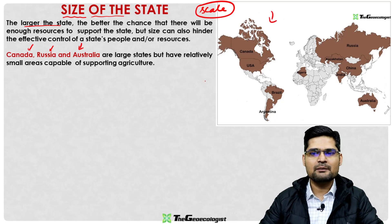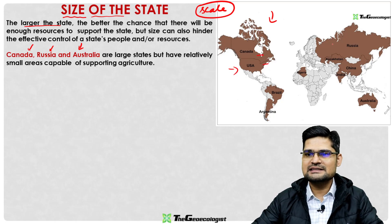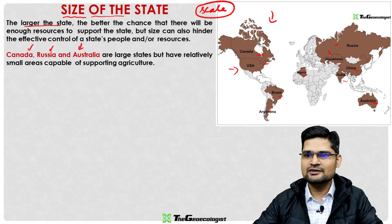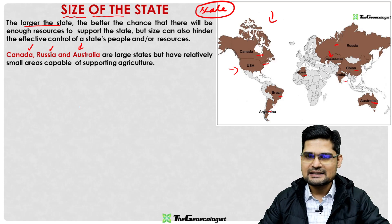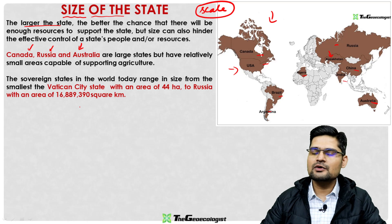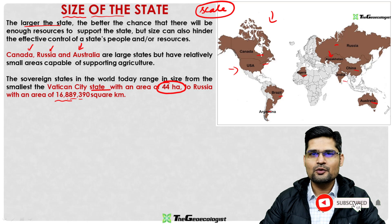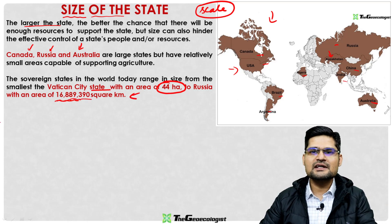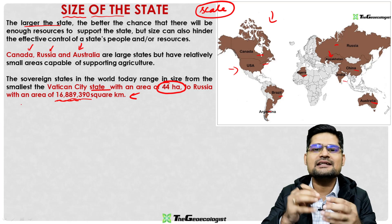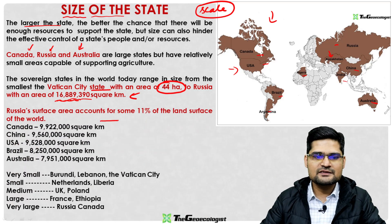If you observe the map, the largest states in the world include Canada, USA, Russia, China, India, Australia, Algeria, Brazil, Argentina, and Kazakhstan. Vatican City has just 44 hectares of area, while Russia has 16,889,390 square kilometers — a drastic range between the smallest and the largest nations in the world.